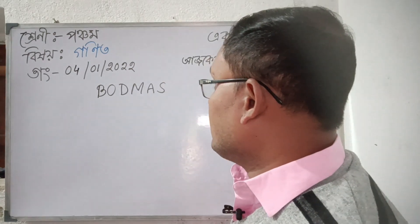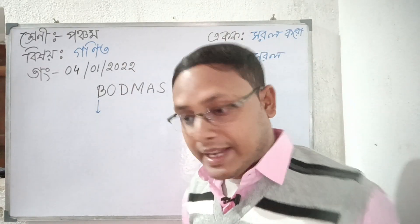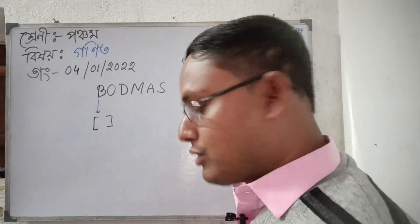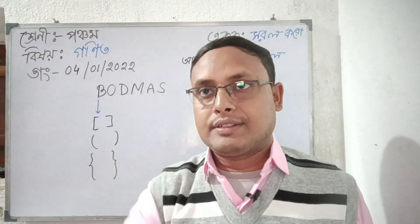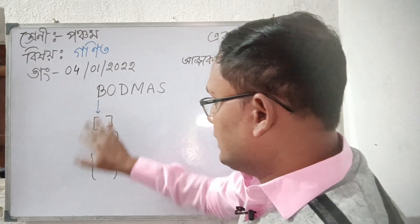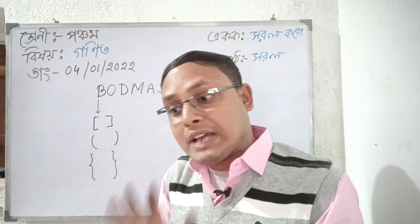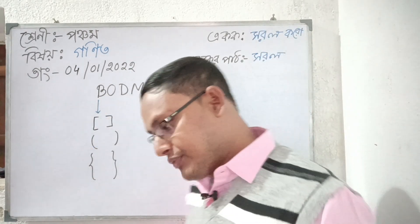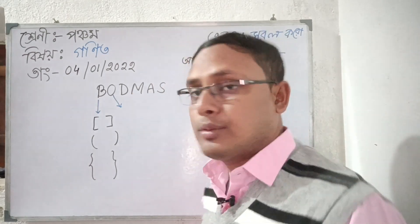Let's see the first thing. B for Brackets. Brackets means that we can see the operation is going to be solved first. So that's a proof that we can see the brackets are going to be solved.